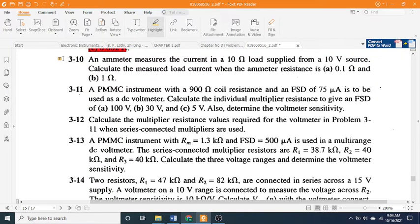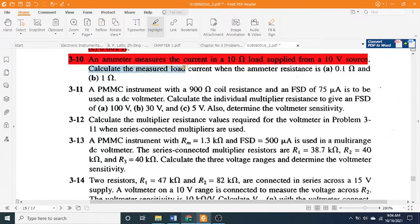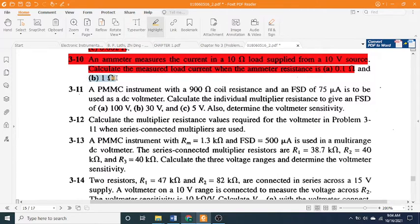3-10: An ammeter measures the current in a 10 Ω load supplied from a 10 V source. Calculate the measured load current when the ammeter resistance is (a) 0.1 Ω and (b) 1 Ω.